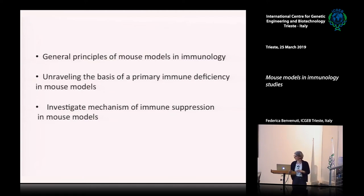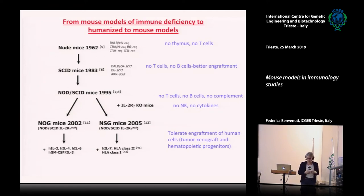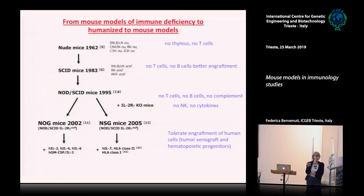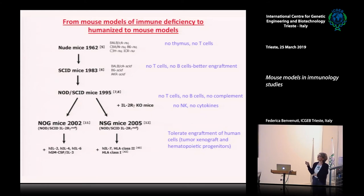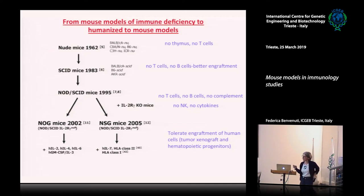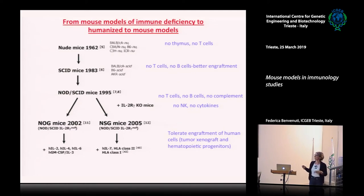I'd like to start with an overview of how mouse models developed over the years. Immunology is one of the fields for which mouse models have been really heavily exploited. Already in 1962, there was the first report of an immune-deficient mouse model due to a spontaneous mutation causing lack of certain immune cells. The interest in these models was to have a system where human immune cells could be grafted to study their development and function. These mice tolerate some engraftment of human immune cells.